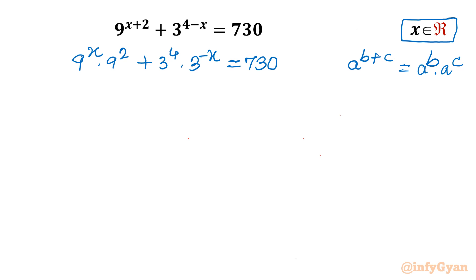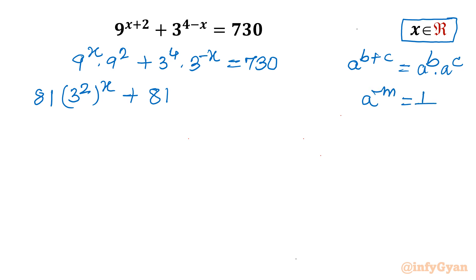We can write 9 as 3 squared, whole power x. 9 squared is 81. So we write plus 3 power 4, which is also 81, and 3 power minus x. By the law a power minus m equals 1 over a power m, we can write it as 81 over 3 power x, equal to 730.